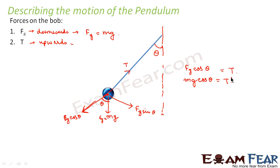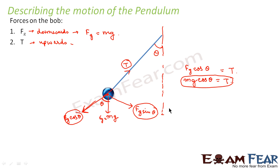Now what about mg sin theta? There is no motion along the vertical direction, so the vertical forces cancel. But the component mg sin theta — also written as fg sin theta — is the one which produces the restoring torque about the pivot point. This component is what causes the bob to always try to come back to its equilibrium position.